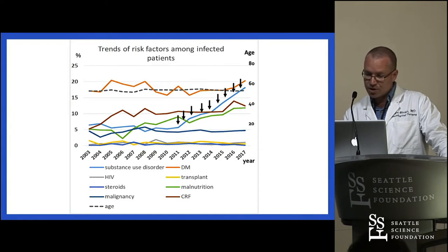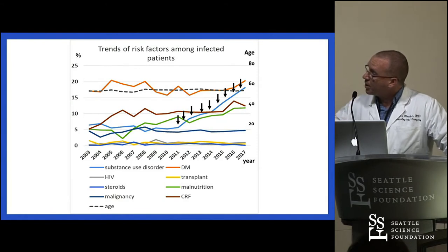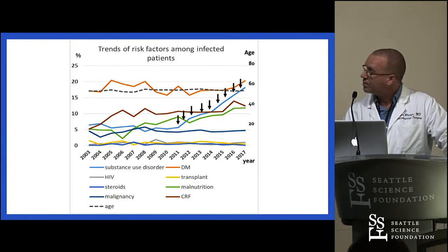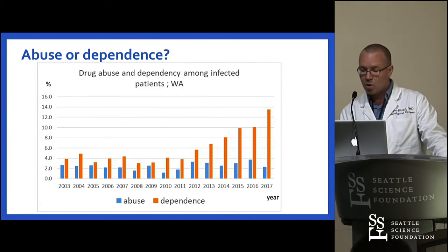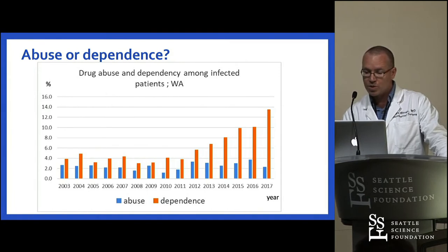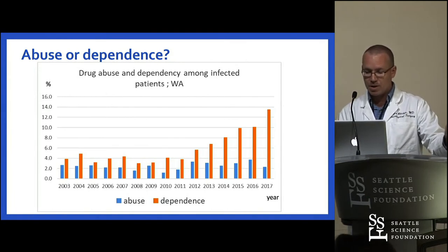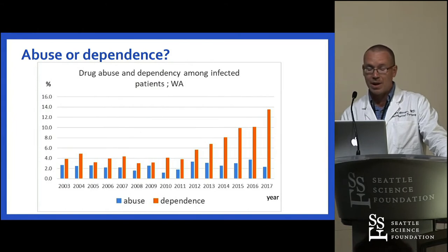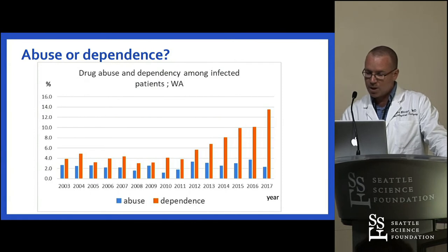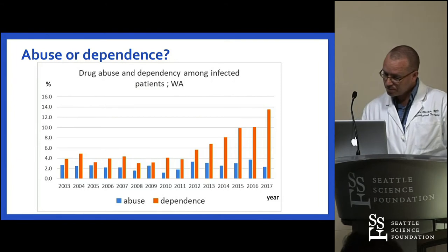Another risk factor that started going up around the same time was malnutrition, depicted by the green line beneath the blue one. The term drug abuse is not fully accurate, as we really retrieved codes associated with both drug abuse and dependence. Some IVDAs in our hospitals were coded as being dependent, which would have resulted in underreporting. When we separated the codes, it seemed that drug dependence is in fact the dominant code that had increased.